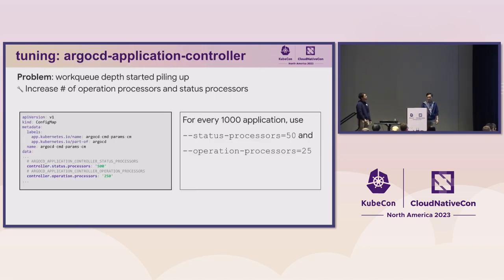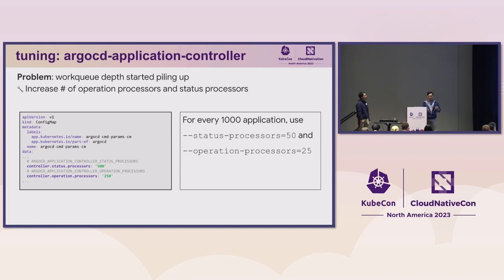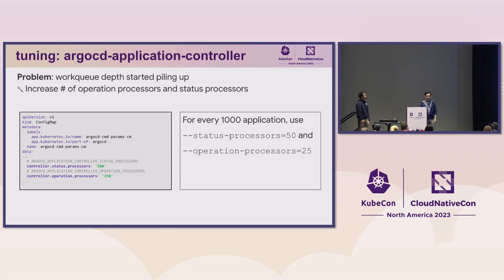Moving to the app controller: one of the first problems was the work queue depth piling up and not going down. We investigated and decided to increase the number of operation processors and status processors, which control the number of concurrent reconciliations and synchronizations. A rule of thumb: for every 1,000 applications, use 50 status processors and 25 operation processors.